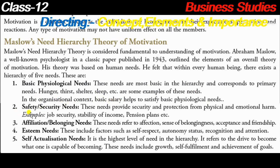The second need is safety and security. This need provides security and protection from physical and emotional harm. If you are safe and secure, you won't face physical or emotional difficulties. Examples include job security, stable income, and a pension plan. When these are met, you face no physical, emotional, or mental tension.